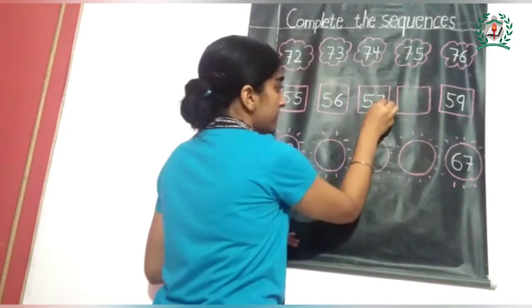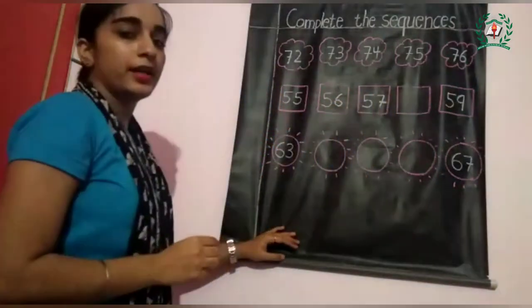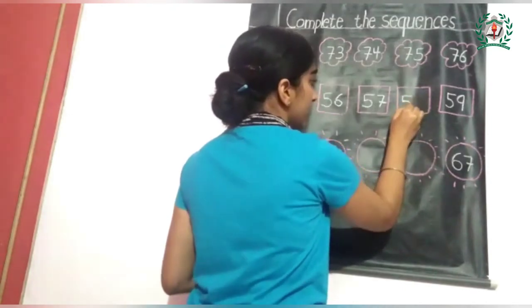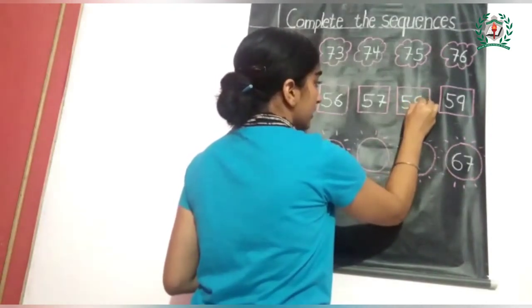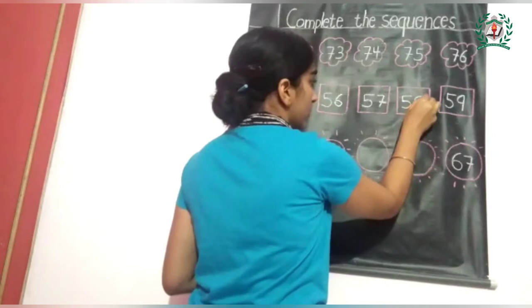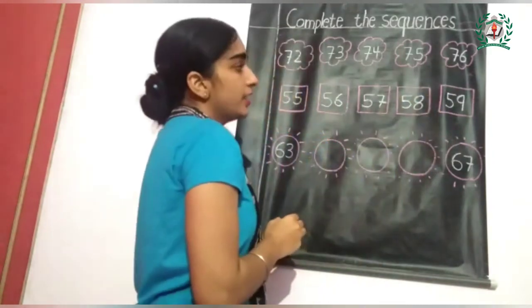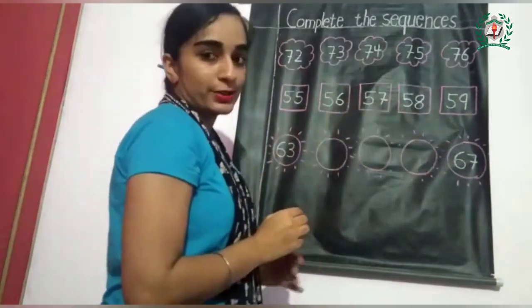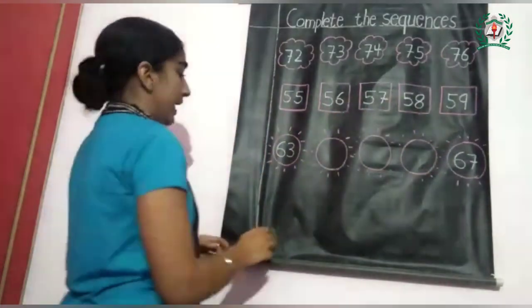What comes after 57? It's 58. What comes after 58? It's 59. This sequence is also completed.